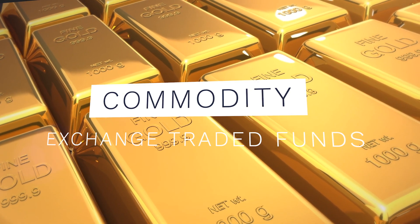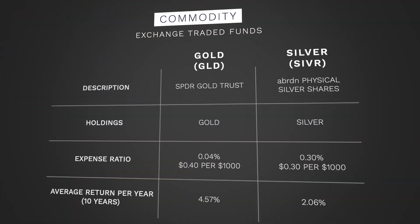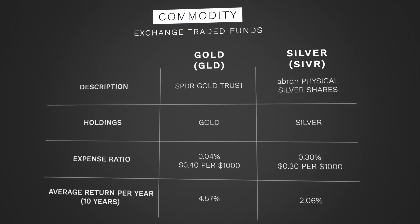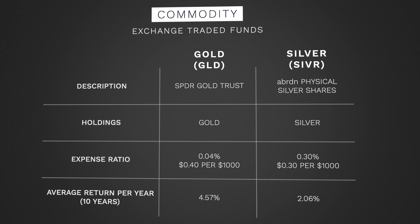Our next type of ETF is Commodity ETFs. There are some unique factors with commodities as they don't necessarily track with the price of equities, so if you understand stocks but are new to commodities, it would be advised that you research more to understand how prices can be influenced. A Commodity ETF gives you the opportunity to diversify outside of stocks — for example, in a gold-based ETF — without having to buy and store physical gold. Typically, gold and silver will not fluctuate as much as stocks, and they are a diversification tool used to stabilize a portfolio in the case of a financial downturn.